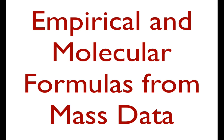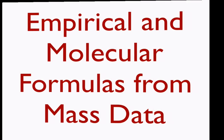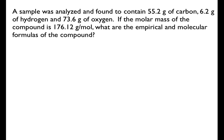In this video I'm going to show you how to determine the empirical and molecular formulas from mass data. We have a sample that's been analyzed and found to contain 55.2 grams of carbon, 6.2 grams of hydrogen, and 73.6 grams of oxygen. We're also told the molar mass of our compound is 176.12 grams per mole. We want to know what the empirical and molecular formulas are.